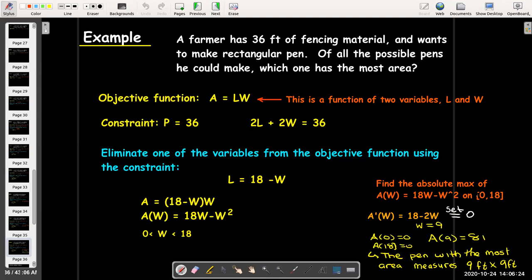Really, the endpoints are just as a sanity check. Remember, we're trying to maximize the area. Well, if I choose my endpoints to be 0 and 18, then the area would be 0 with those choices. That would be an absurd choice for W. But, we already saw, actually, in our previous example, that when W is 9, that the length is also going to be 9. And 9 times 9 is 81. And so, the pen with the most area measures 9 feet by 9 feet.